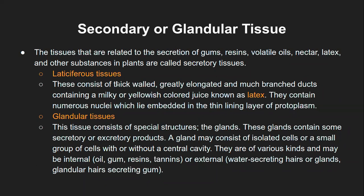Within glandular tissue, two types we want to look at: the first is laticiferous tissue. Because they secrete latex, they are called laticiferous. They are thick-walled, greatly elongated, and there are numerous nuclei present in these layers of the tissue, which is why they keep synthesizing latex as a fluid. Another type of glandular tissue secretes oil, gum, resins, and tannins. These can give out either secretory or excretory products.